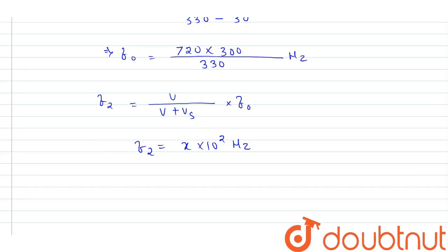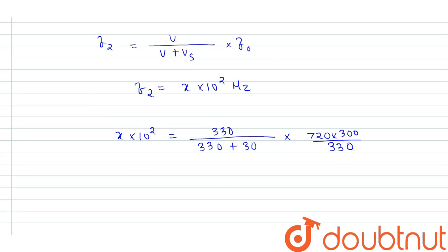Now we put this value in the above equation and we get x into 10 power 2 equals 330 divided by 330 plus 30 into the value of f0 we already calculated, which is 720 into 300 divided by 330. After solving this we get the value of x equals 6 hertz. So the value of x is 6 hertz and this is our answer. Thank you.